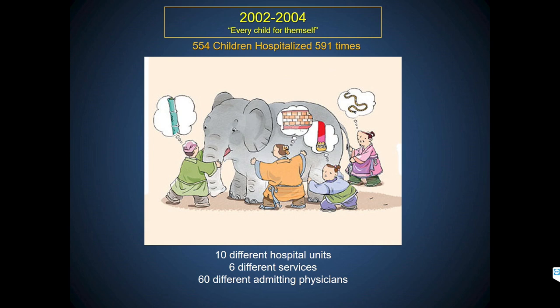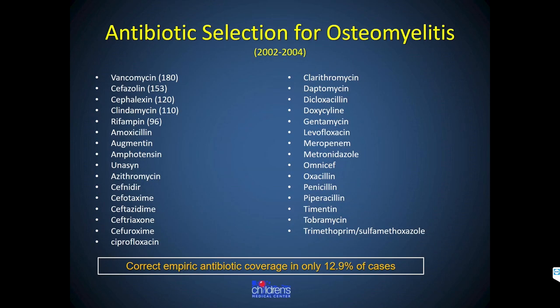554 children were hospitalized 591 times. I call that period 'every child for themselves' because care was done on a case-by-case basis — very random. As you read the charts you couldn't believe the antibiotic combinations and changes. Just to treat osteomyelitis, with about 200 cases in a three-year period, there were 33 different antibiotics on the list. The frequency distributions of the most commonly used ones didn't make sense given the bacteria we isolated.